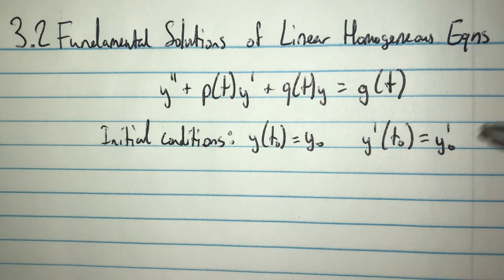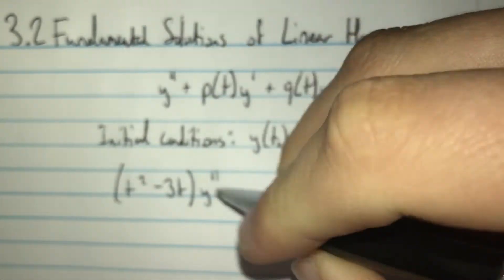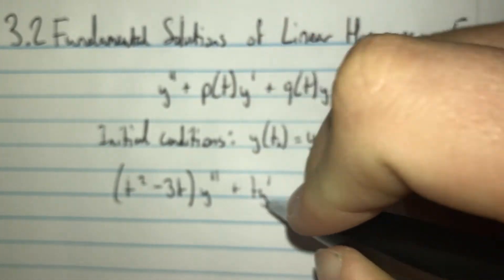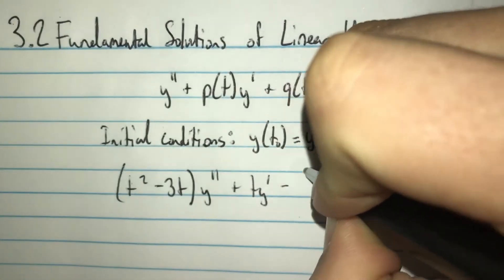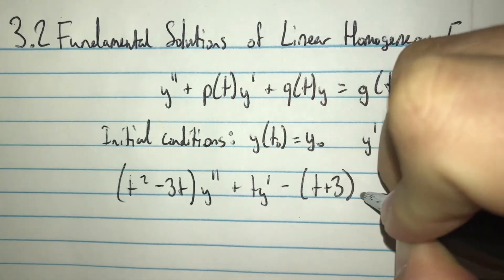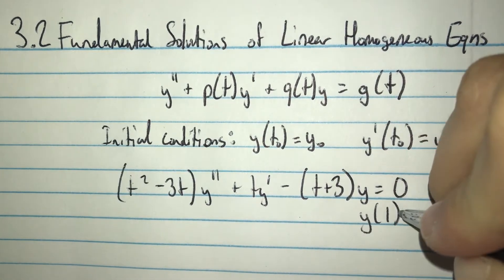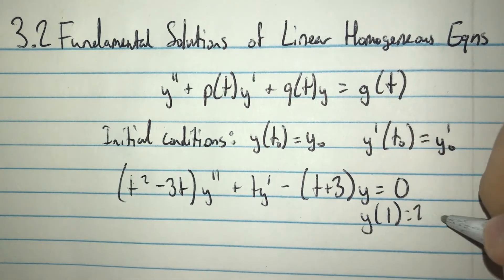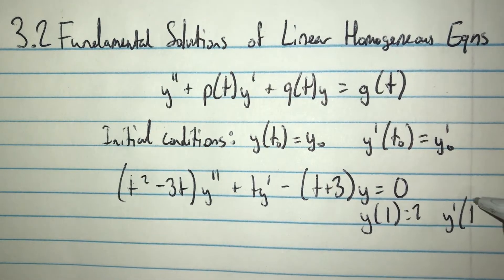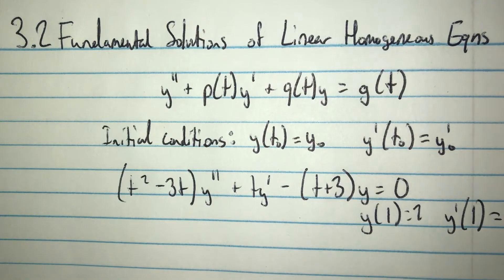Let's start with an example from the textbook. We have t squared minus 3t times the second derivative, plus t times y prime, minus the quantity t plus 3 times y, equal to zero. The initial conditions are y of 1 equals 2 and y prime of 1 equals 1.